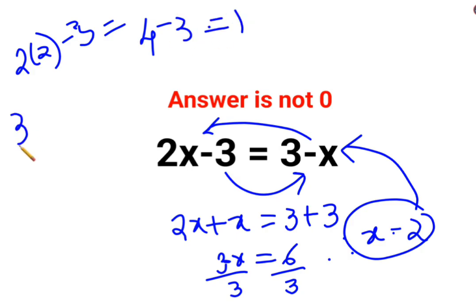The next one, we have 3 minus x. Instead of x, we will put 2. So 3 minus 2, here also the answer comes out to be 1 which is equal to your LHS. So here, we can say the value of x for this particular question equals to 2.